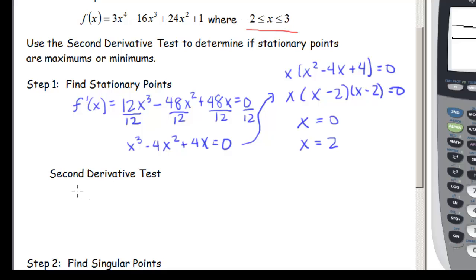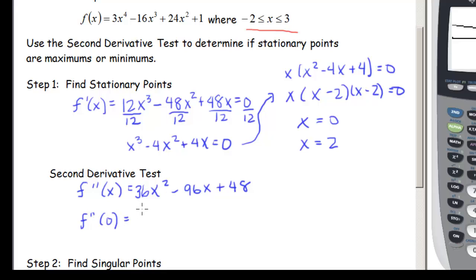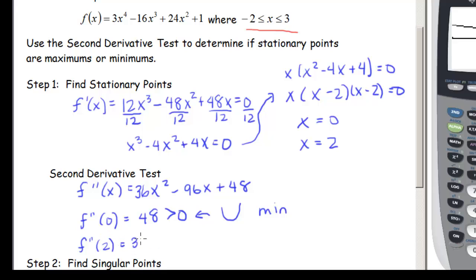To use the second derivative test, we find f''(x) = 36x² - 96x + 48. Plugging in x = 0 gives 0 - 0 + 48 = 48, which is greater than zero, so the curve is concave up and x = 0 is a minimum. Plugging in x = 2 gives 36(4) - 96(2) + 48 = 0, so the second derivative test is inconclusive at x = 2.